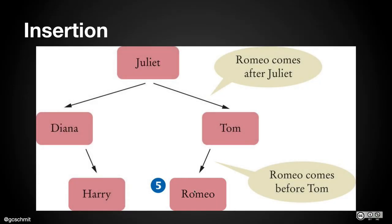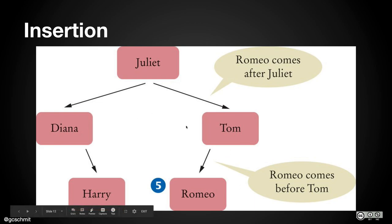Note that nothing we're doing here ensures the tree is balanced. If the root were something like Zara, everything would be in the left subtree and it wouldn't be balanced. But we're not concerned with that right now. Let's write the code for actually inserting a node.